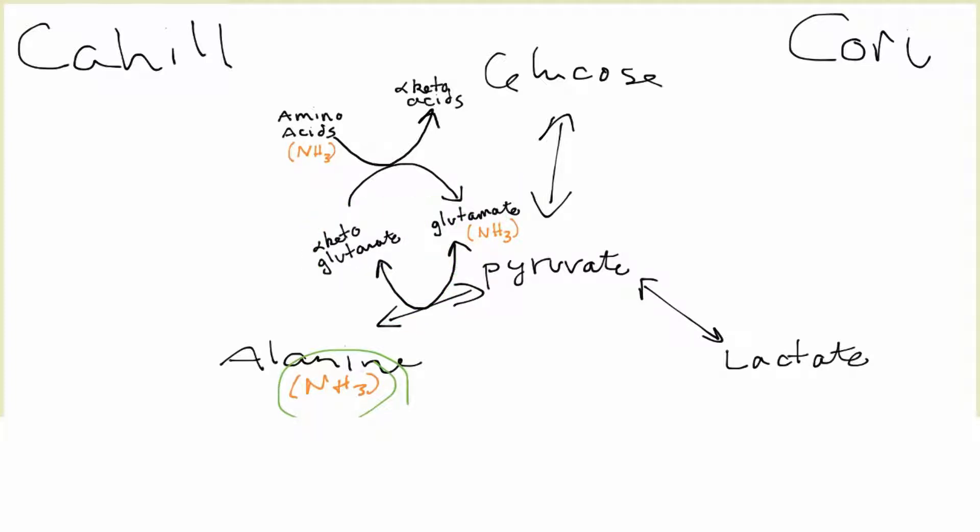That's why you have a depletion of alpha-ketoglutarate. So one, you have a depletion of glutamate in the central nervous system, and you have a depletion of alpha-ketoglutarate basically everywhere else in the liver and anywhere else where you're going to have oxidative phosphorylation taking place.